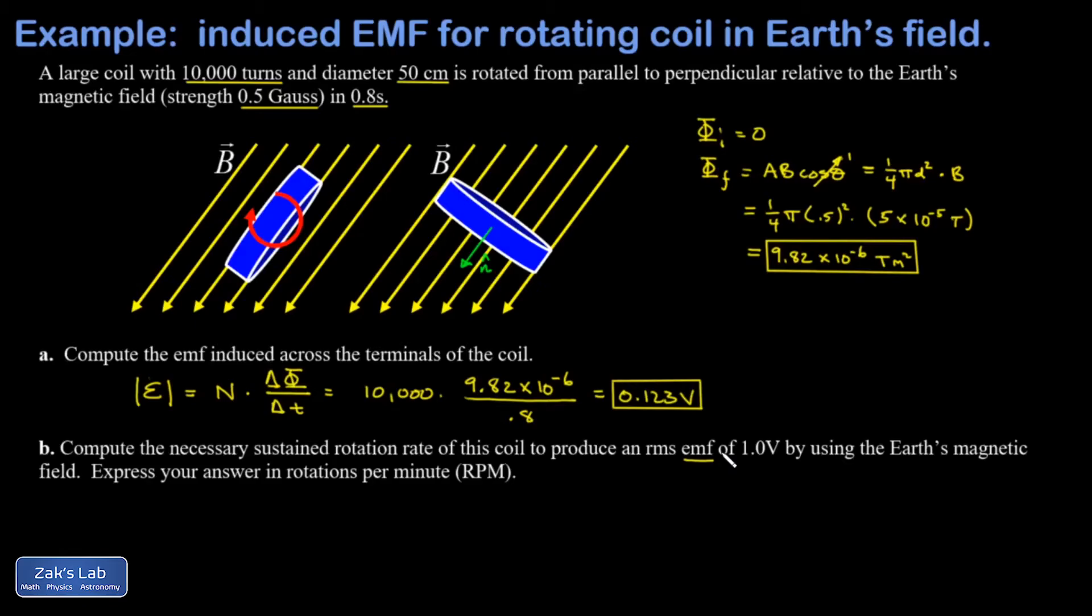The generator formula said this: the voltage as a function of time produced by a rotating loop in a magnetic field is given by some peak value times the sine of ωt, where ω is the angular velocity in radians per second. It turned out that peak value is given by NAB times ω.